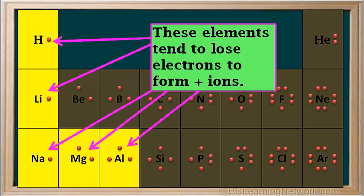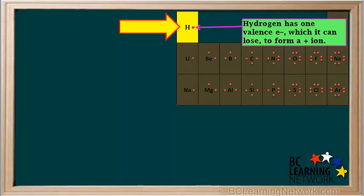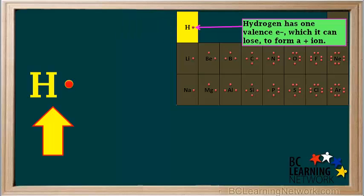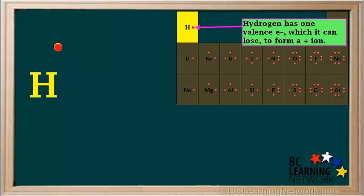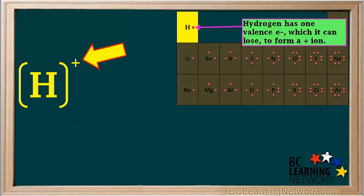We'll start with hydrogen. It has one valence electron, which it can lose to form an H+ ion. Here's the Lewis diagram for a neutral hydrogen atom with one valence electron. Hydrogen will readily lose this electron. Since it has lost one electron but hasn't lost any protons, it has formed an ion with a positive one charge. To show this as a Lewis diagram, we put square brackets around the symbol, then add a plus sign on the top right of the bracket. So this is the Lewis diagram for the H+ ion.